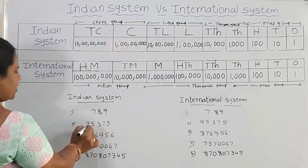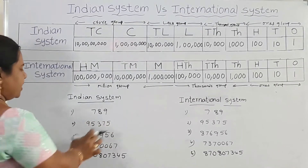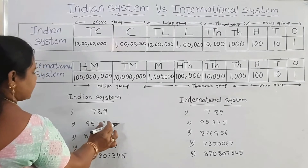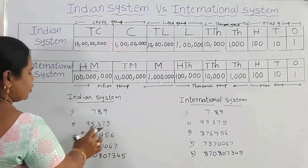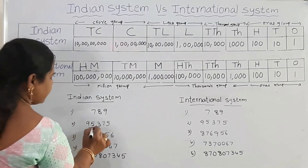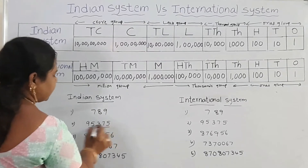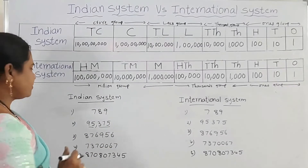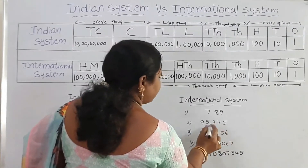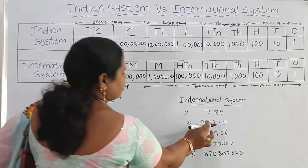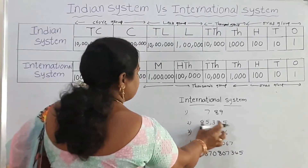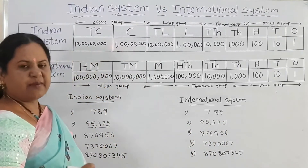Next, the second number is 95,375. The first three places form the ones group. The next group is thousands — there are 95 thousands here, so the number is 95,375. Up to the 10,000 place, both systems have the same place values.